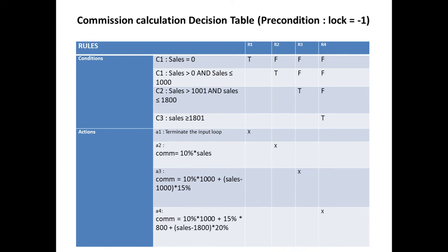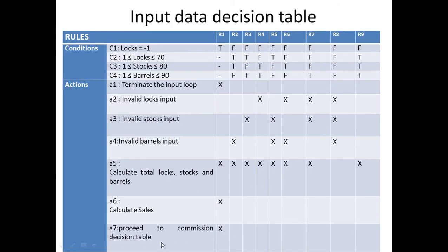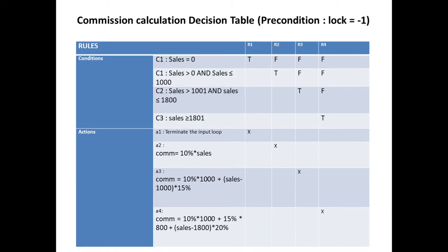As mentioned, action A7 is to proceed to the commission decision table. For the commission decision table there are also a few rules. The first condition is sales equal to zero. Condition two is sales greater than zero and less than or equal to 1000. The next range is 1001 to 1800. The third is sales greater than 1800. These are the four conditions, and with true/false values it gives 16 rules, but after reducing, only four rules remain.